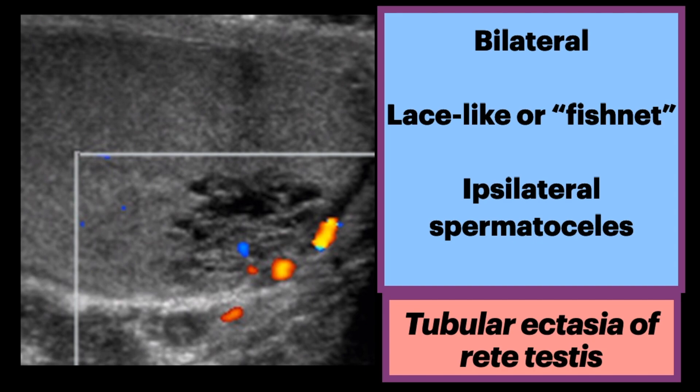They are frequently bilateral, but may be asymmetric. These branching tubules converge at the mediastinum testis, and the dilated tubules create a lace-like or fishnet appearance.